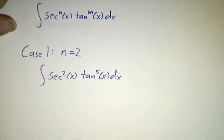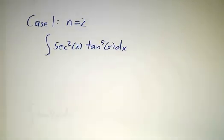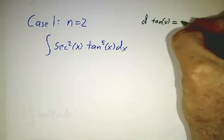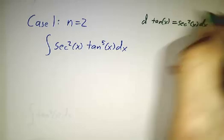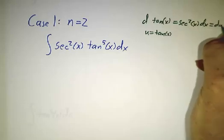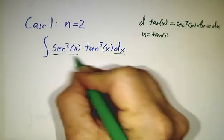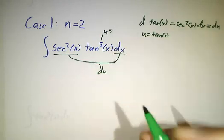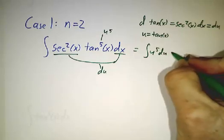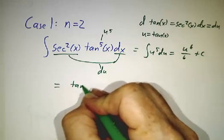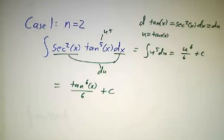As before, we have four cases. The first case is when n equals 2. You use the fact that the derivative of tangent of x is secant squared of x dx. So you do a u-substitution where u is tangent of x, and secant squared of x dx is du. This gives u to the fifth, so the integral becomes u to the fifth du, which is u to the sixth over six plus a constant — that's tangent to the sixth of x over six plus a constant. Straightforward.